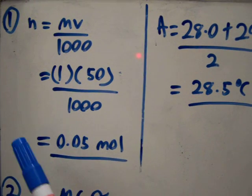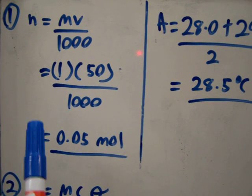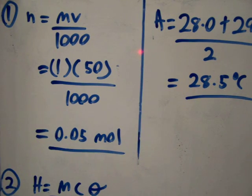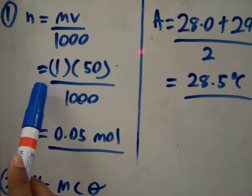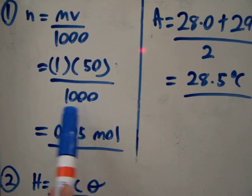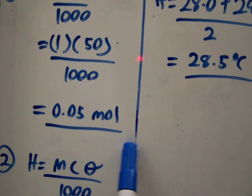Secondly, you must put into the formula n equals MV over 1000. The M is the molarity of the solution and V is the volume of the solution. Divide by 1000, you will get 0.05 mol.